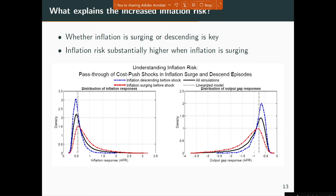The left plot shows the distribution of inflation if you are hit with adverse cost-push shocks on an upward trajectory of inflation — for instance, supply chain disruptions followed by an energy price shock when inflation is already ratcheting up. In such an environment, you see more probability mass shifted to higher inflation rates on average. Conversely, if you're already on a downside slope of inflation, you see less. The nonlinear model allows you to distinguish and work with that in a very rigorous way compared to the linearized model.